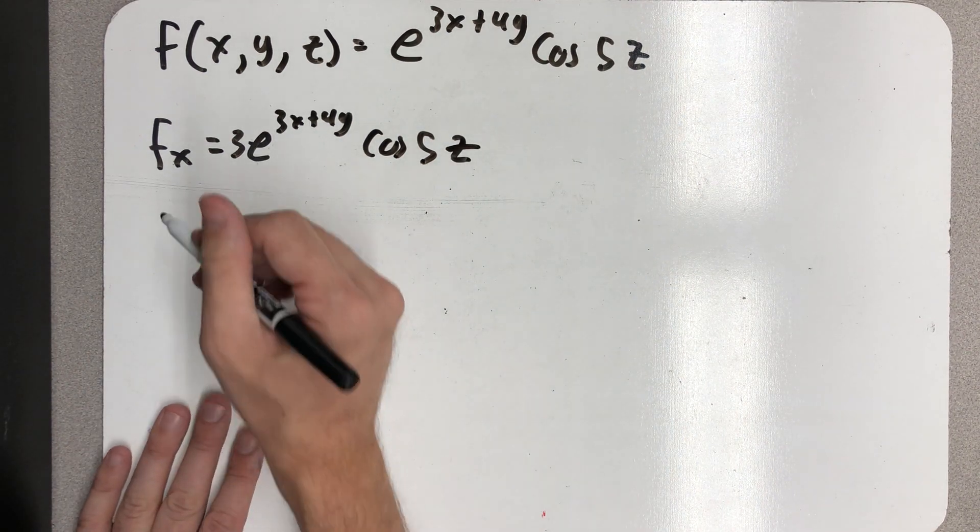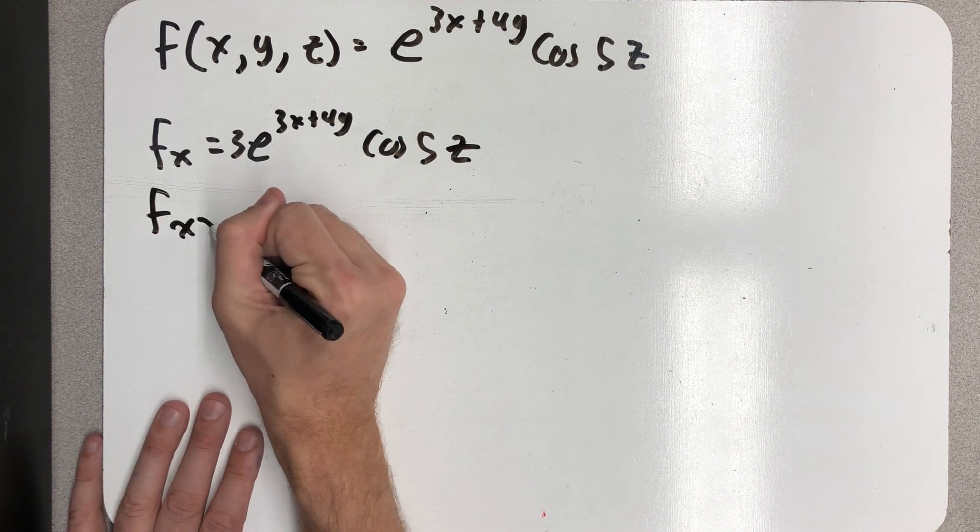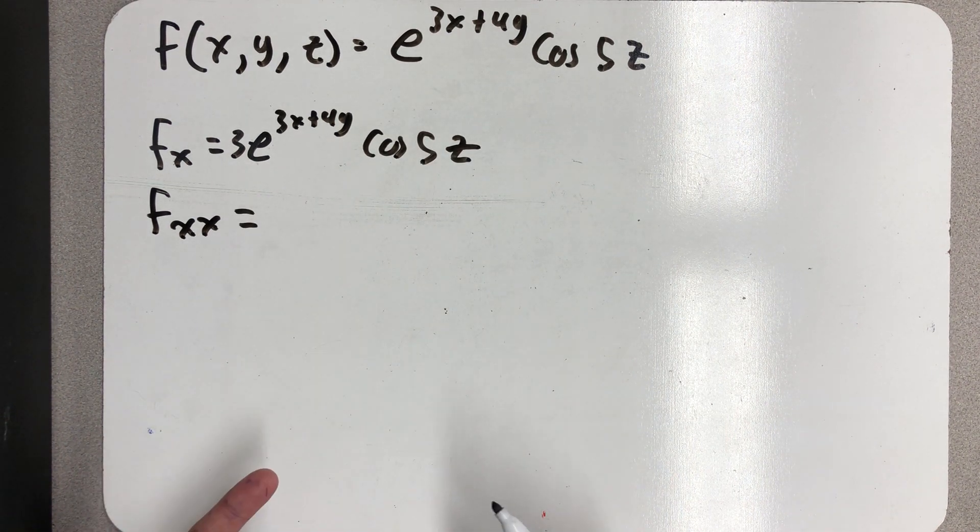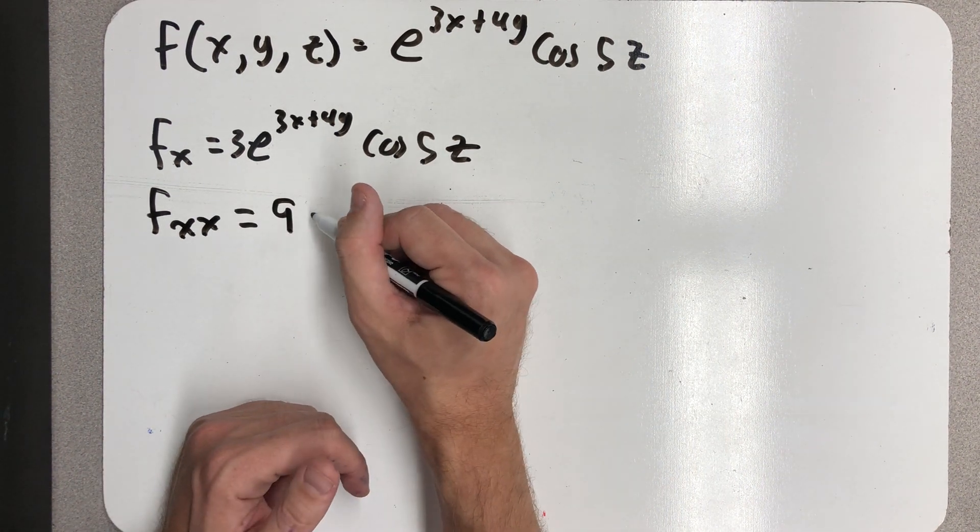All right, let's go on and take the second partial with respect to x. Well, I'm going to repeat that process, and I'll just end up with a 9 out front.